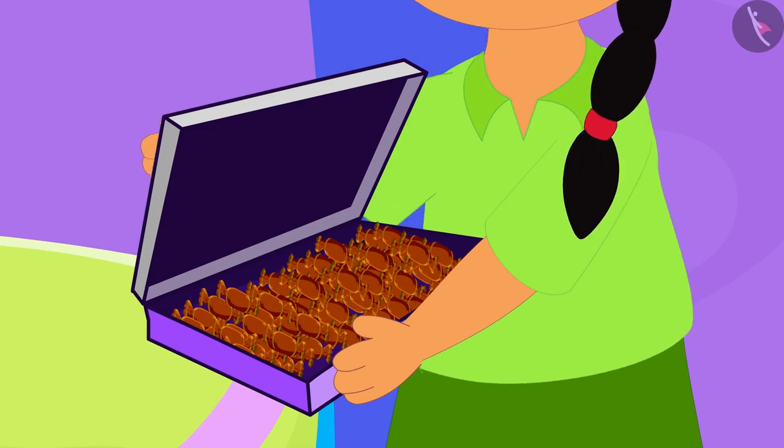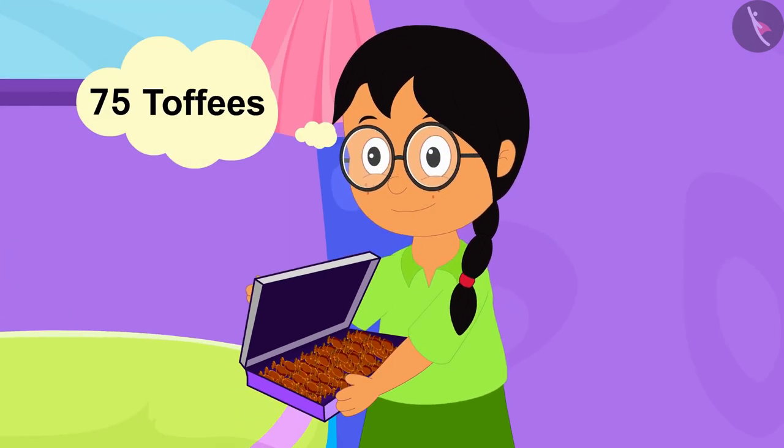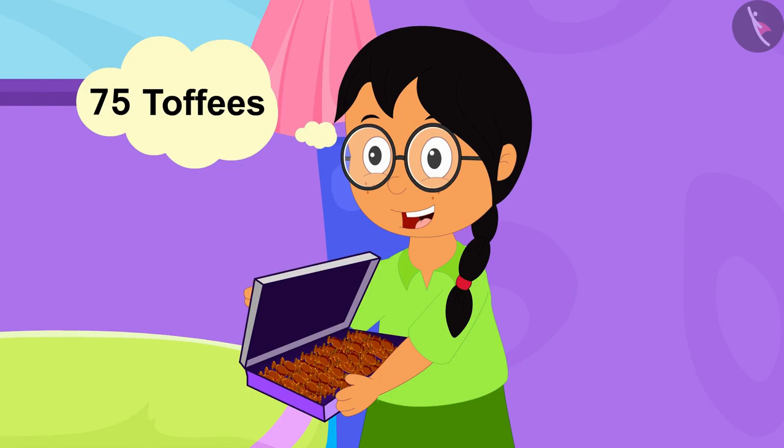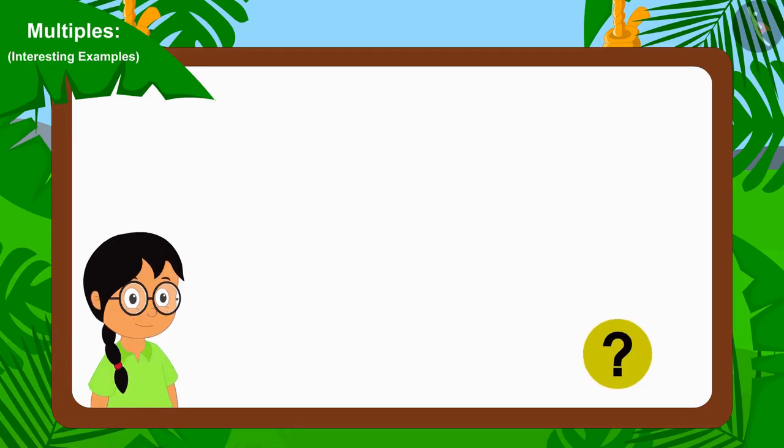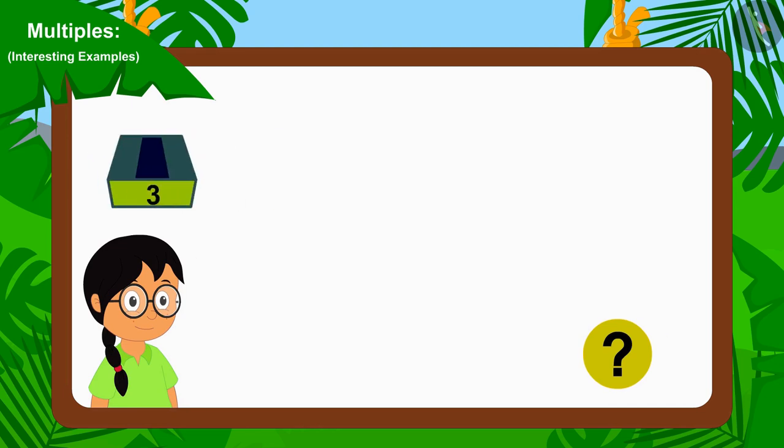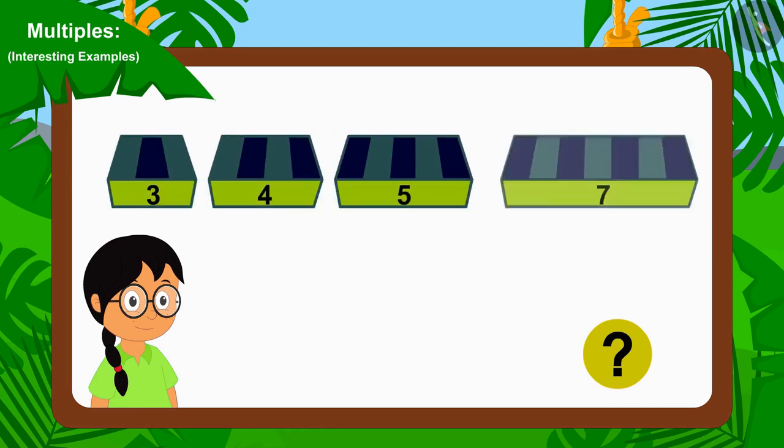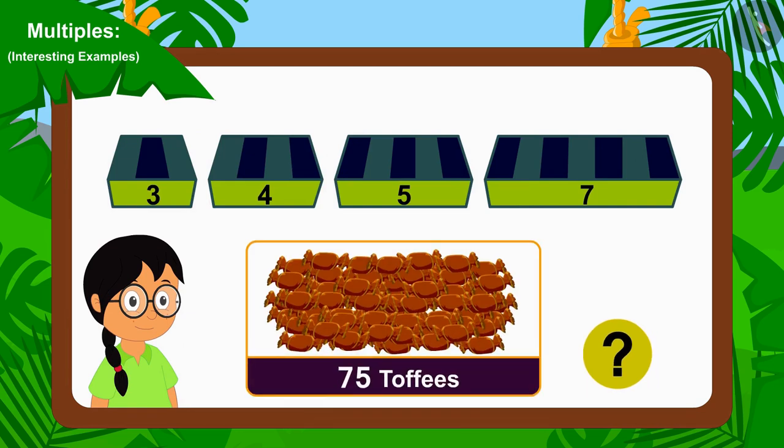Now Minu opened a chocolate toffee packet brought by her uncle. She found 75 toffees in this packet. Now can you tell which of the groups of three, four, five, or seven can Minu use to distribute these 75 chocolate toffees equally? If you want, you can stop the video and find the answer.